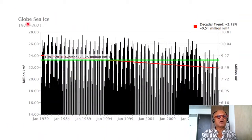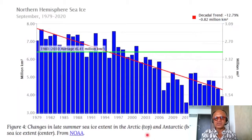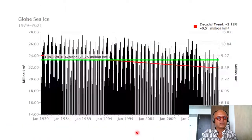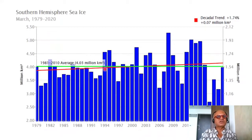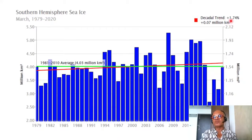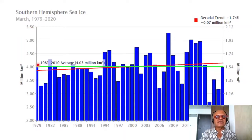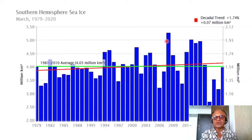Now looking at Southern Hemisphere sea ice. The overall southern hemisphere trend is positive — plus 1.74%, or 0.07 million square kilometers per decade. We are looking at the end of the southern summer, which is March, for 1979 to 2020. The 1981–2020 average is 4.03 million square kilometers. You can see a slight rise in total sea ice coverage and somewhat larger year-to-year variabilities.